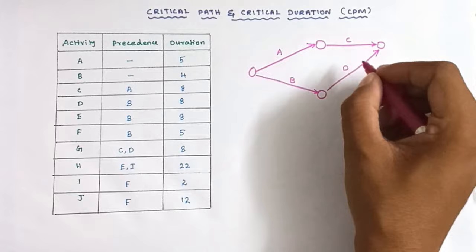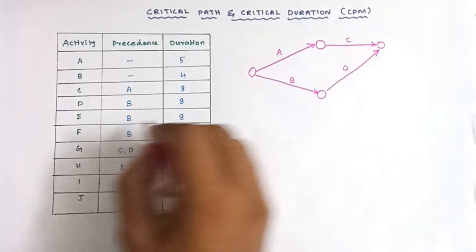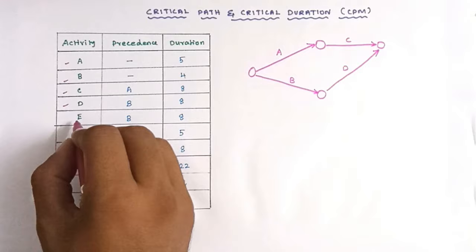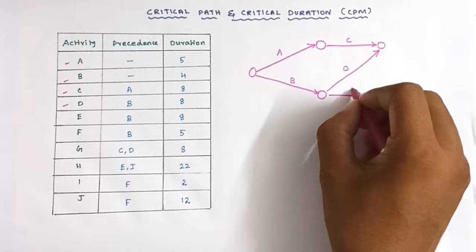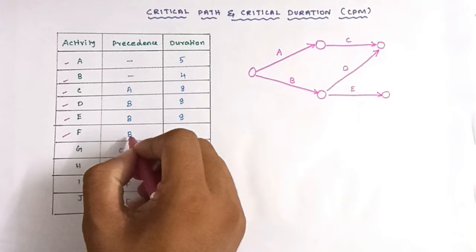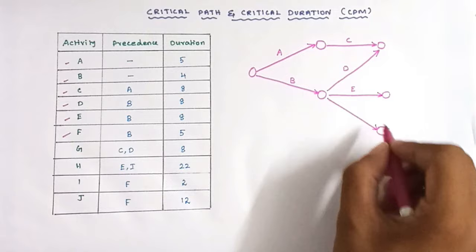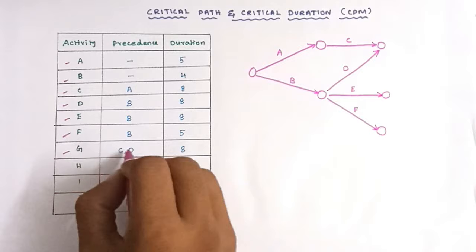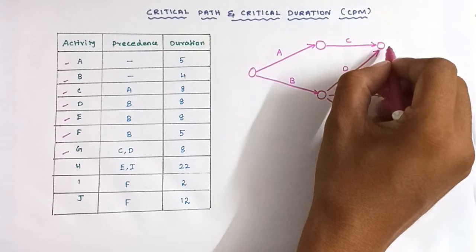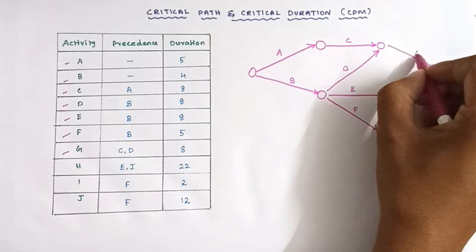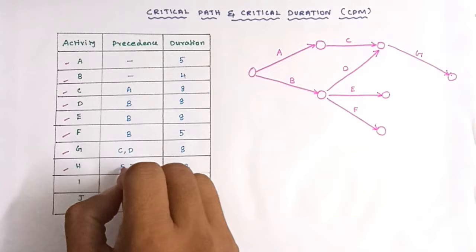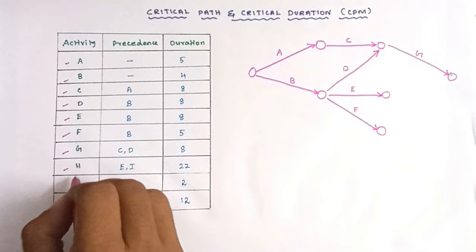After completion of C and D, G will be started. Next, E activity — we can draw E. Next, F — F also has the precedence relationship of B, so we can draw F activity here. Next we draw G activity, with C and D as its precedence. Then for H activity, the precedent relationship is E and I. Since I is not yet drawn, we first draw I — the precedent activity of I is F.